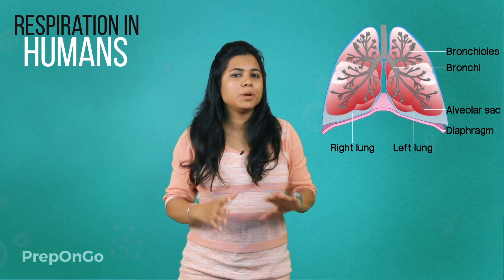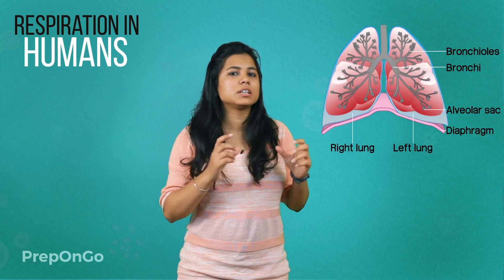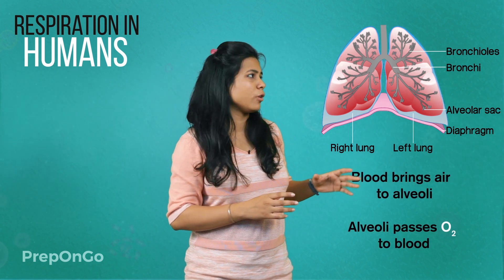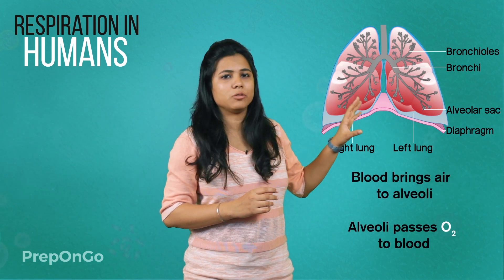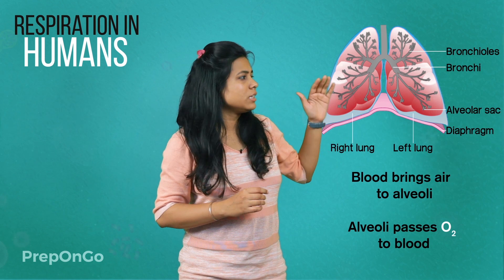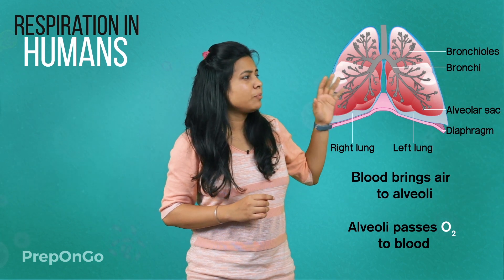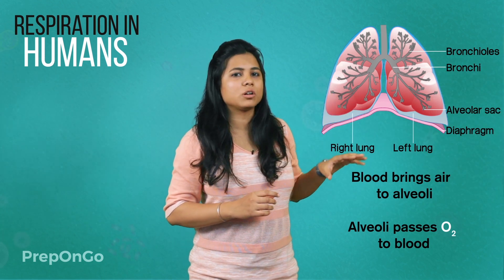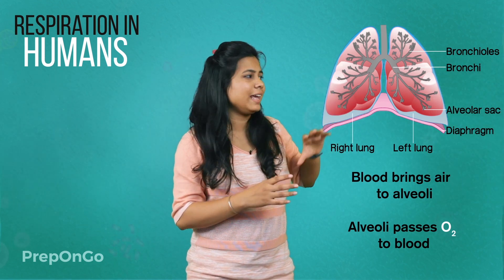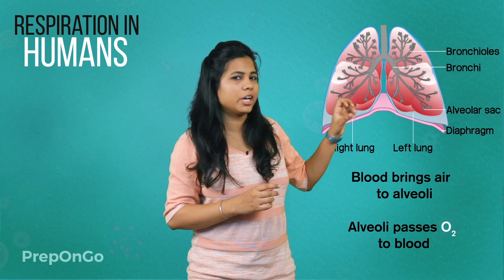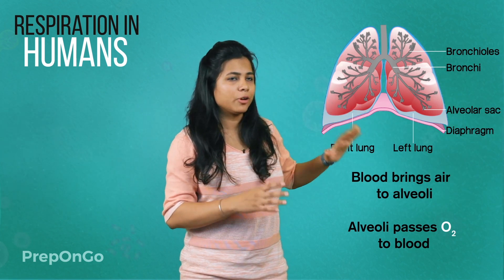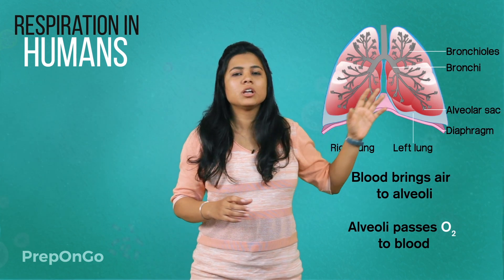The blood brings carbon dioxide in dissolved form to the alveoli. The alveoli then pass oxygen to the blood and take in the carbon dioxide, from where it is released out.